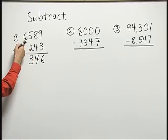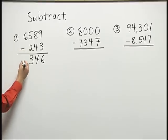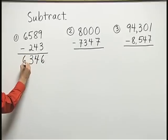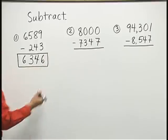And finally, I have 6,000 minus no one-thousands below leaves me with just 6,000 still. So 6,346 is our answer to number one.